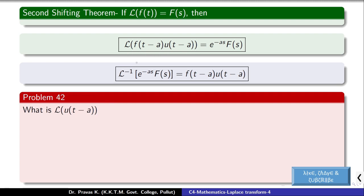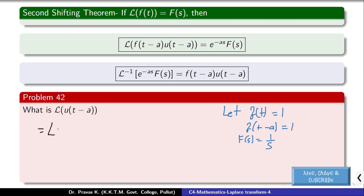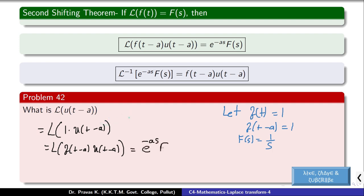What is L of u of t minus a? If f(t-a) equals 1, then f(t) equals 1 and the Laplace transform of 1 is 1/s. So the problem becomes L of 1 into u(t-a), which equals e raised to minus as into F(s), that is e raised to minus as by s.